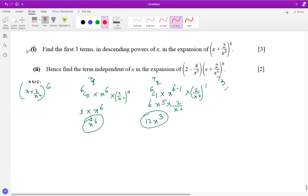Taking T3, plug r as 2. So 6C2 times x to the power 6 minus 2 times 2 over x squared to the power 2. This is 6C2 times x to the power 4 times 4 over x to the power 4, so the x's cancel.